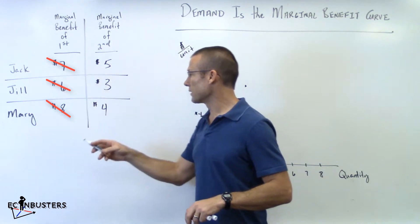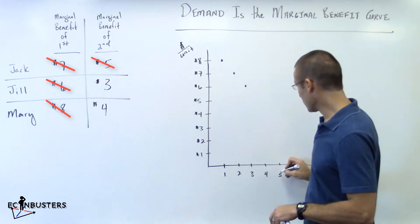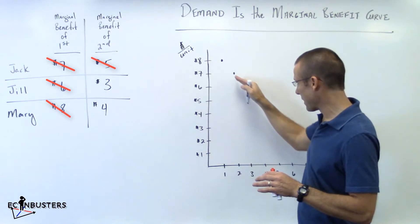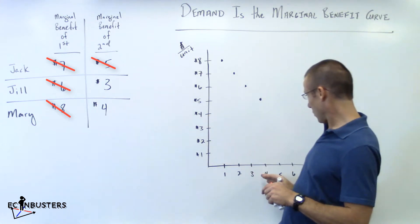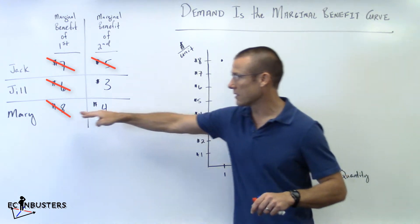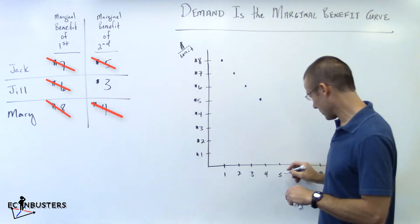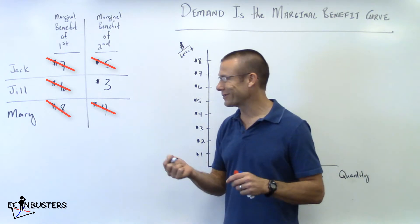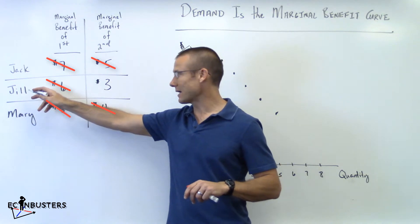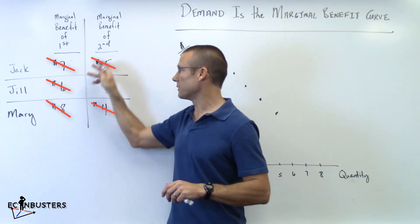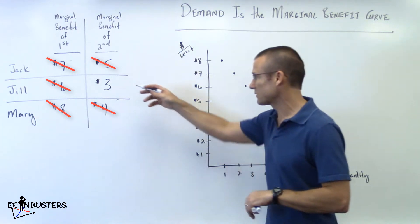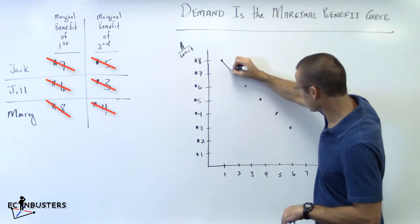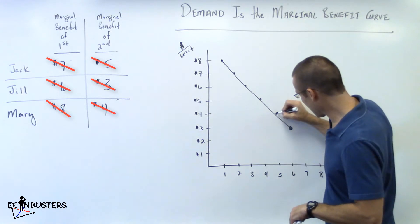For the fourth slice of pizza, the maximum benefit is five dollars — that's Jack's second slice. Dot at four, five. For the fifth slice, that's Mary's second slice: four dollars. Dot at five, four. Finally, the sixth slice is Jill's second slice: three dollars. Dot at six, three. Connect those lines — the curve should look pretty linear because that's how we set it up. I want those dots to stay visible because in later videos I'll say all demand curves are made up of a series of dots.